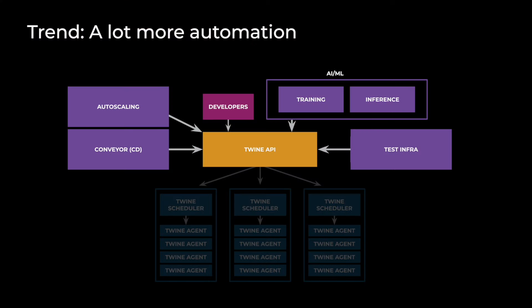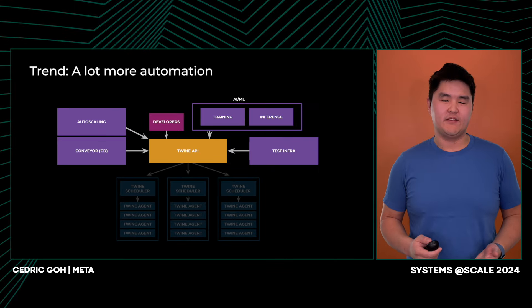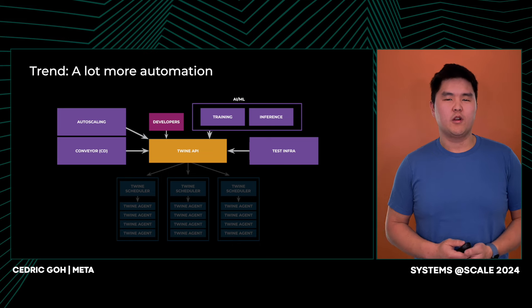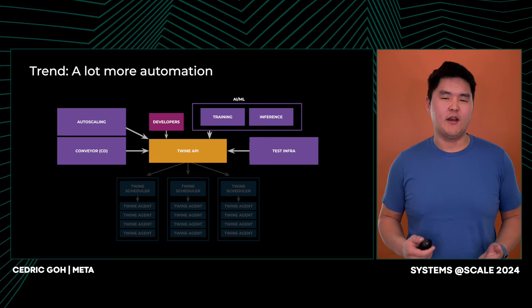Today I'd like to share with you three trends we've observed in the cluster management space over the years. The first trend is a lot more automation building on top of the Twine APIs. We've seen the emergence of new AI technologies, such as training and inference, that are now dynamically creating, managing, and deleting gangs of Twine jobs. We've also seen the accelerated adoption of existing automation such as auto-scaling and testing infra, due to capacity efficiency and release safety initiatives. This has shifted regular traffic patterns from being predominantly developer-driven and following a predictable push schedule to one where critical automations are managing Twine jobs around the clock.